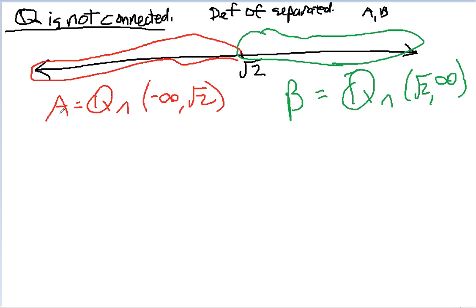Moreover, any limit point of A cannot be in B and vice versa. So the way we say that is we need A intersect B-bar equals B-bar intersect A has to be the empty set.